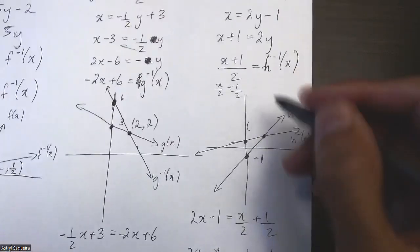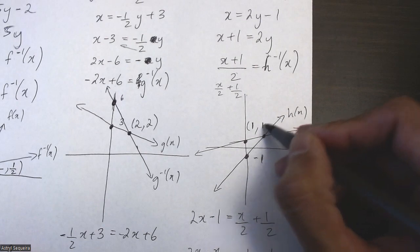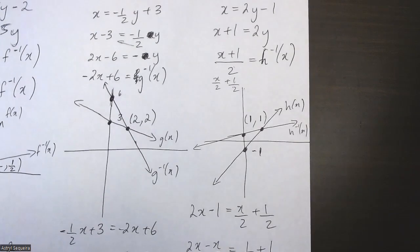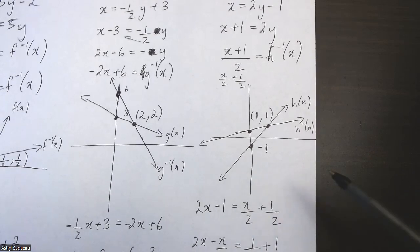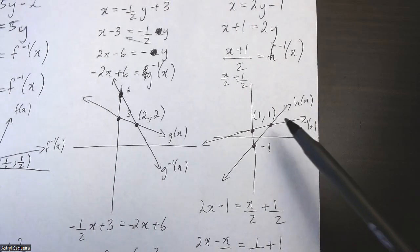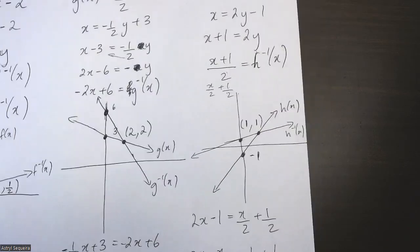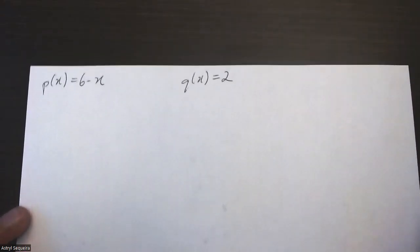It looks like every time we do this, the x and y values of the intersection point are the same. I didn't know that was true before, but it appears to hold for all linear inverse functions — if you find the intersection of a function with its inverse, the x and y values will always match. Even I learned something new in this video.